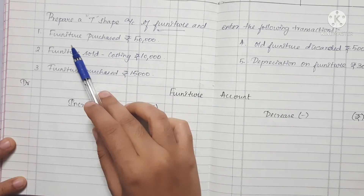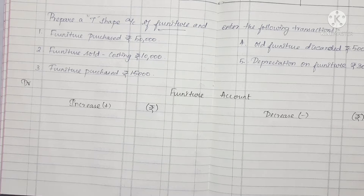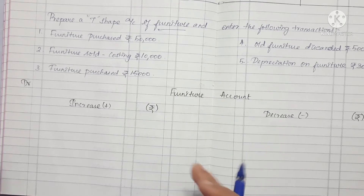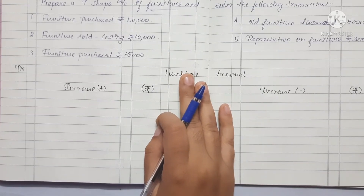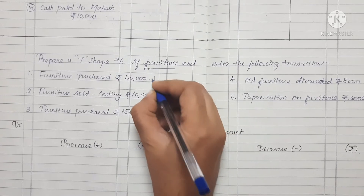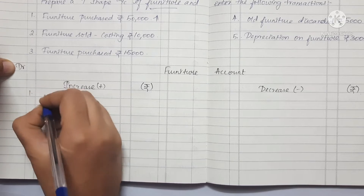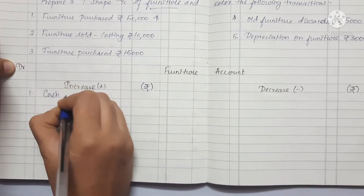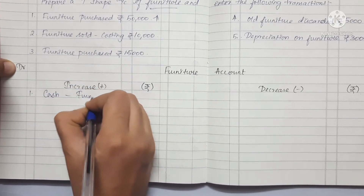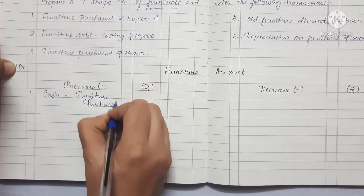The first transaction is Furniture Purchased. We already have furniture and we will purchase extra. When we purchase furniture, the asset increases. So this goes on the Debit side as an Increase. The entry is: Cash — Furniture Purchased, amount Rs. 50,000.